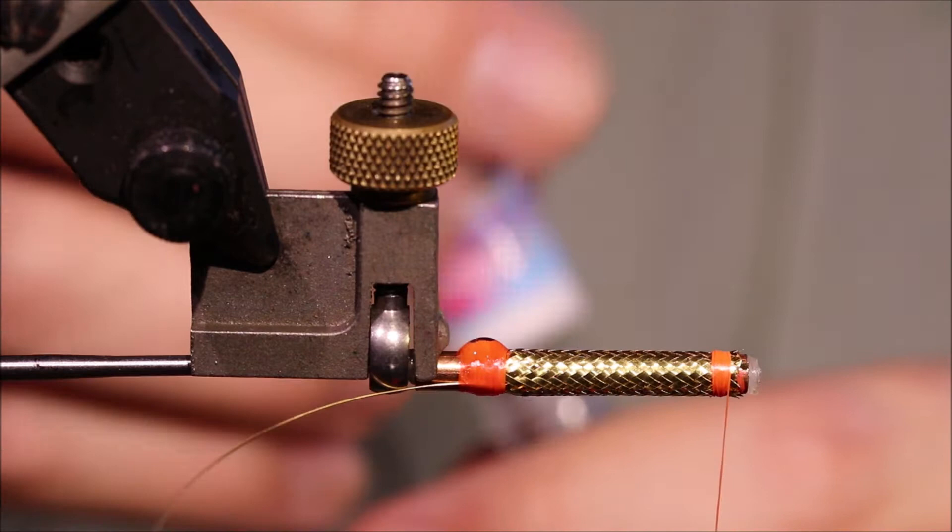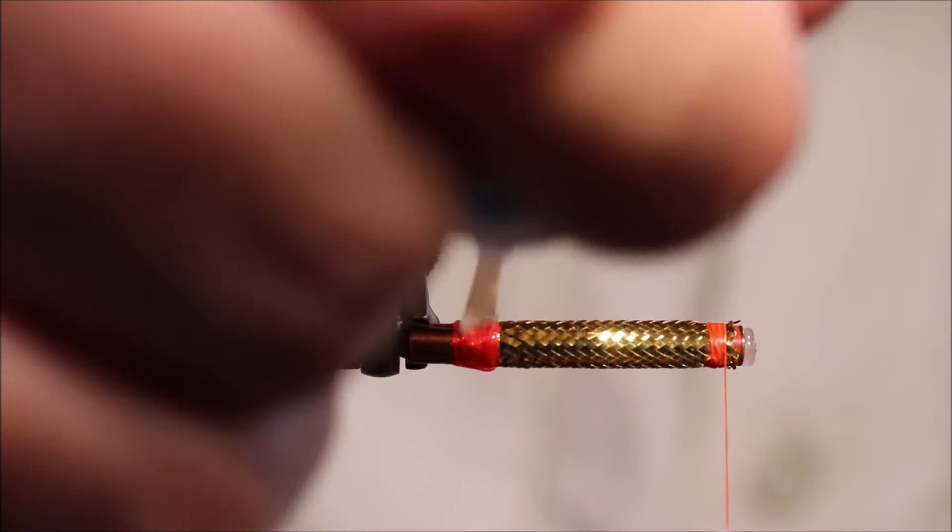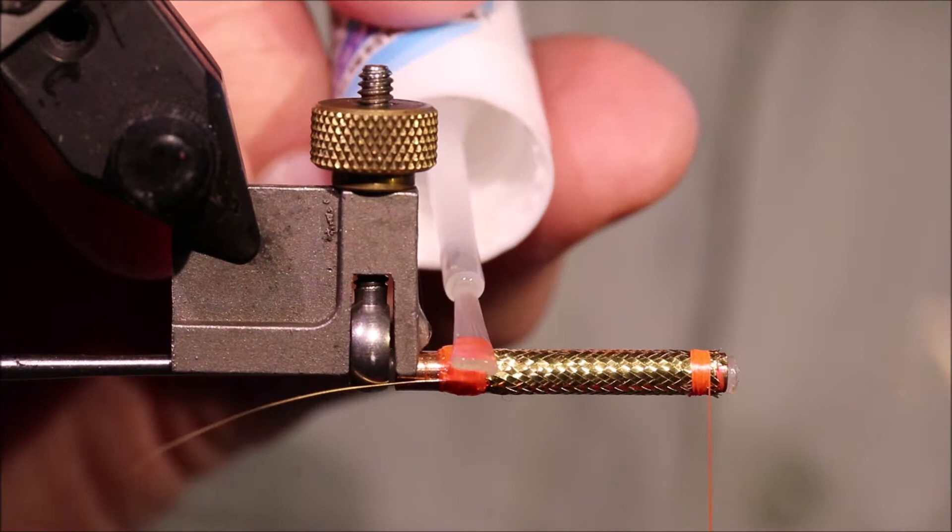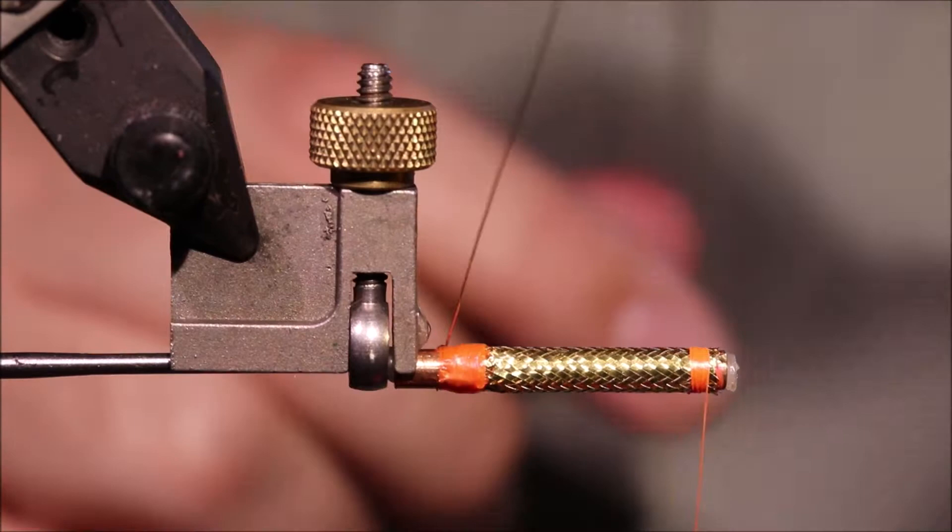See my varnish just kind of blobbed there, a little bit heavy handed. Just run it back. Use the brush to smooth it back out. And you could use UV resin if you liked.